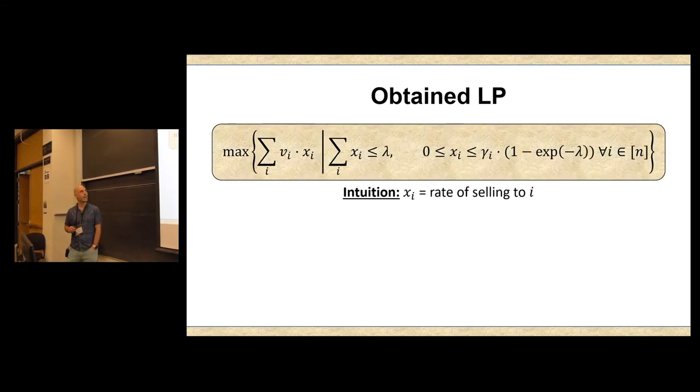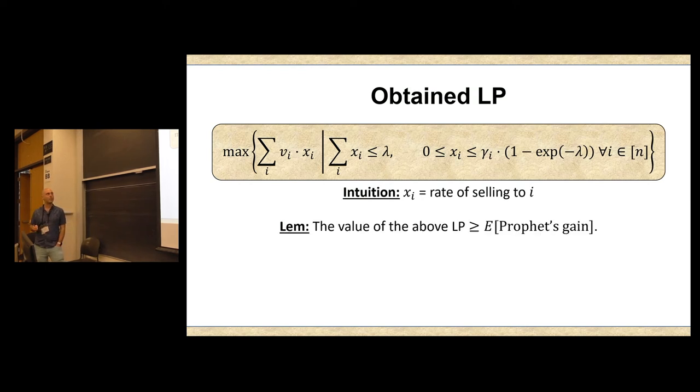So what's the constraint we get from this? If we denote by Xi the rate at which items of type i are sold, this rate is at most the rate of arrival times the probability that they see an available item, which we just said is at most 1 minus e to the minus lambda. So the LP we have is as follows. Xi you should think of as the rate at which I sell to buyer of type i, so buyers who bid vi. The objective is just the average long-term gain. The first constraint says that I cannot sell items faster than the rate at which they're supplied. And the second constraint is non-negativity of these rates plus the PASTA-based constraint from the previous slide.